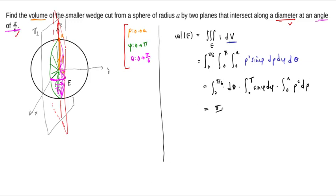And I'll let you guys work out the details here, but this first integral is pi over 6. The second one is just 2, and the third one is 1 third A cubed. And so, if we work this out, we end up with the volume of this wedge region is going to be 2 cancels here. Here we have pi A cubed on top and just 9 on the bottom. And so there's the volume of the wedge of the sphere that makes an angle of pi over 6.